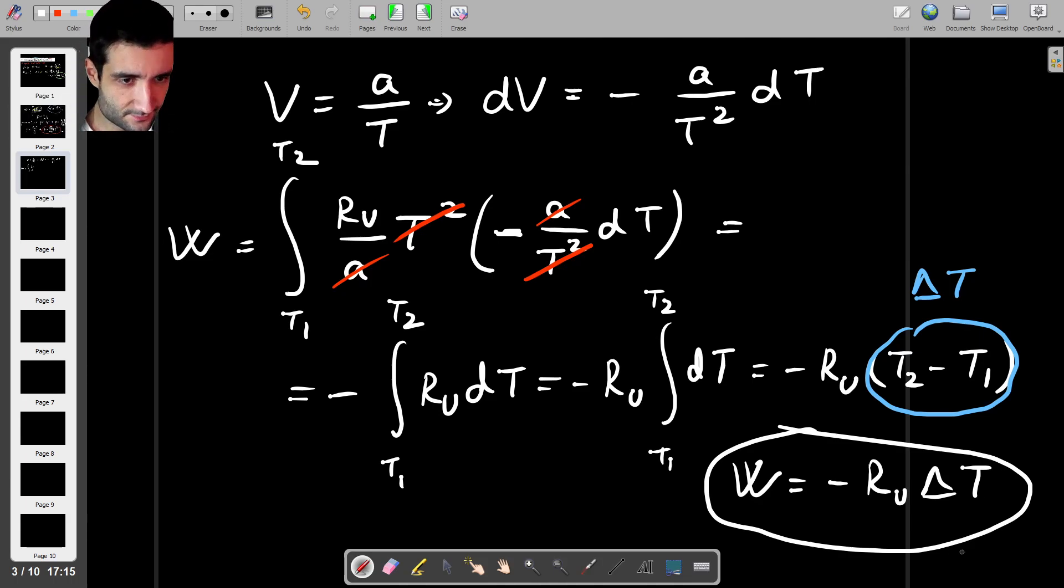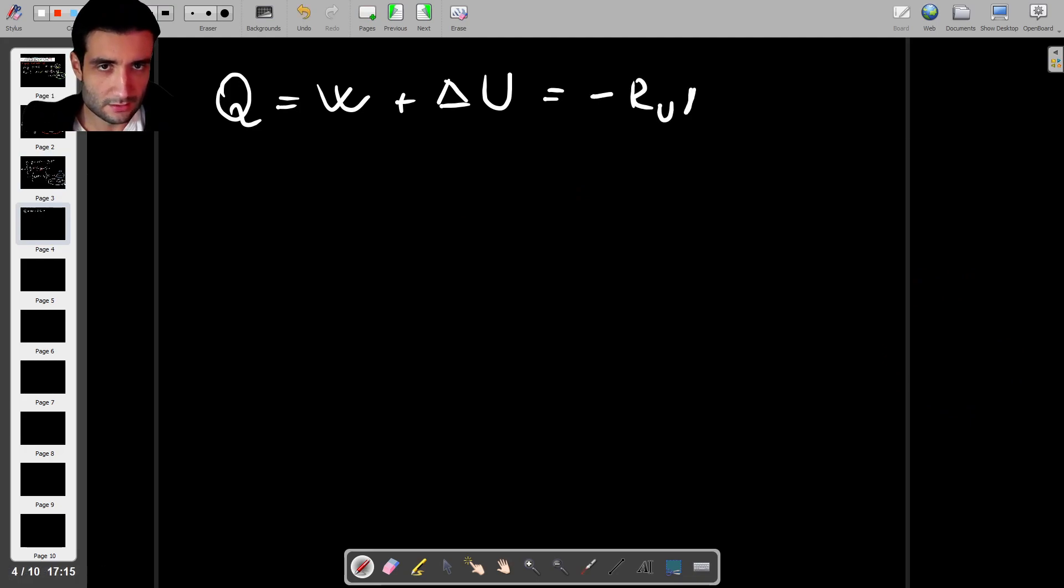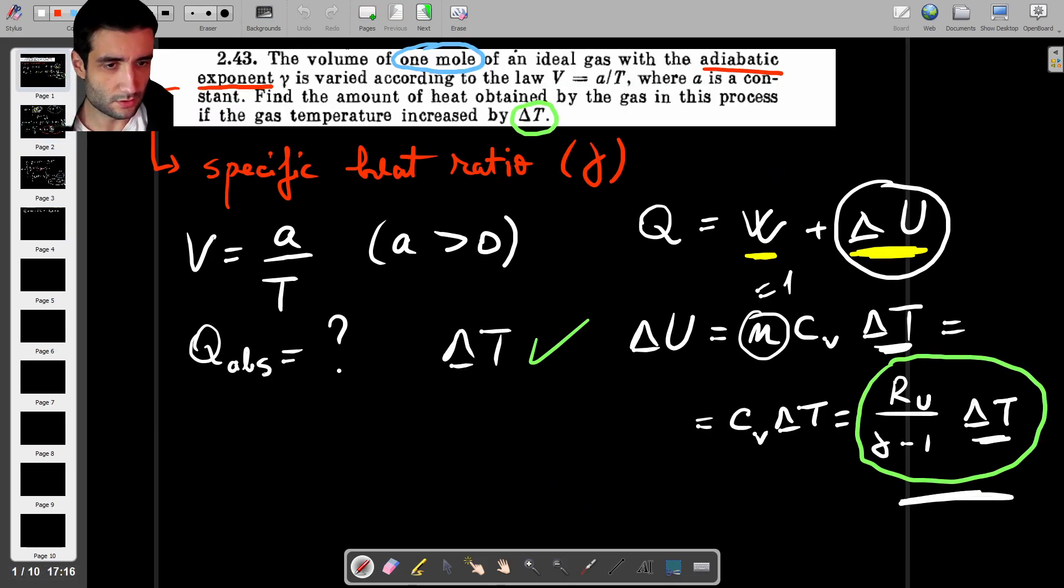Which is negative, so this value is negative meaning that the gas doesn't actually do work, work is being done on the gas. Okay so let's find out the heat. So the heat is work plus change of U so the work we just found it as minus RU delta T and the delta U is this one.